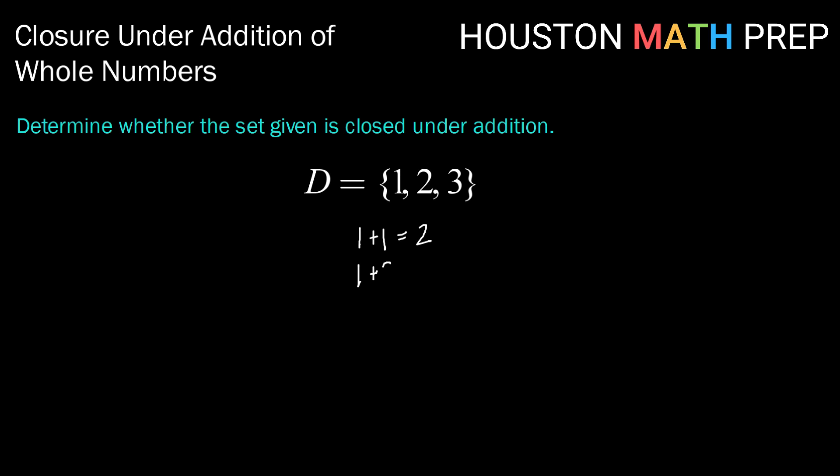What else could we add? We could add 1 plus 2. 1 plus 2 is 3. And that's in the set. Okay, so so far we're good. We could also add 1 plus 3. 1 plus 3 is 4. Oh, now we have a problem, right?